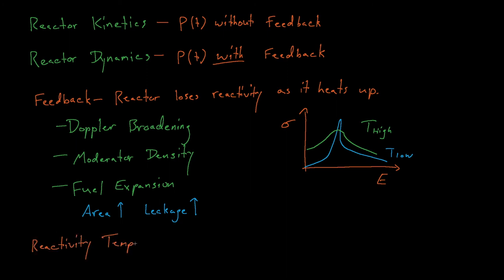Reactivity temperature coefficients, which are just derivatives for k effective with respect to temperature, describe how these feedback mechanisms will lower the reactivity of our system. Generally, reactor operators require that our reactivity coefficients are negative so that our feedback mechanisms will prevent this kind of runaway chain reaction.